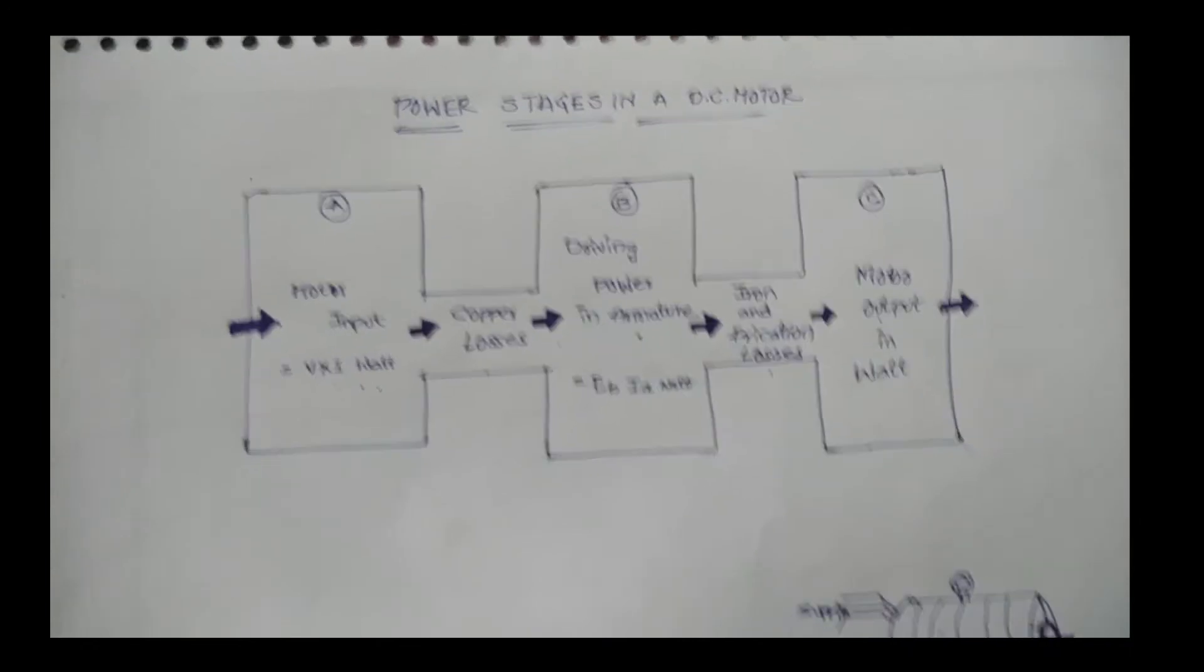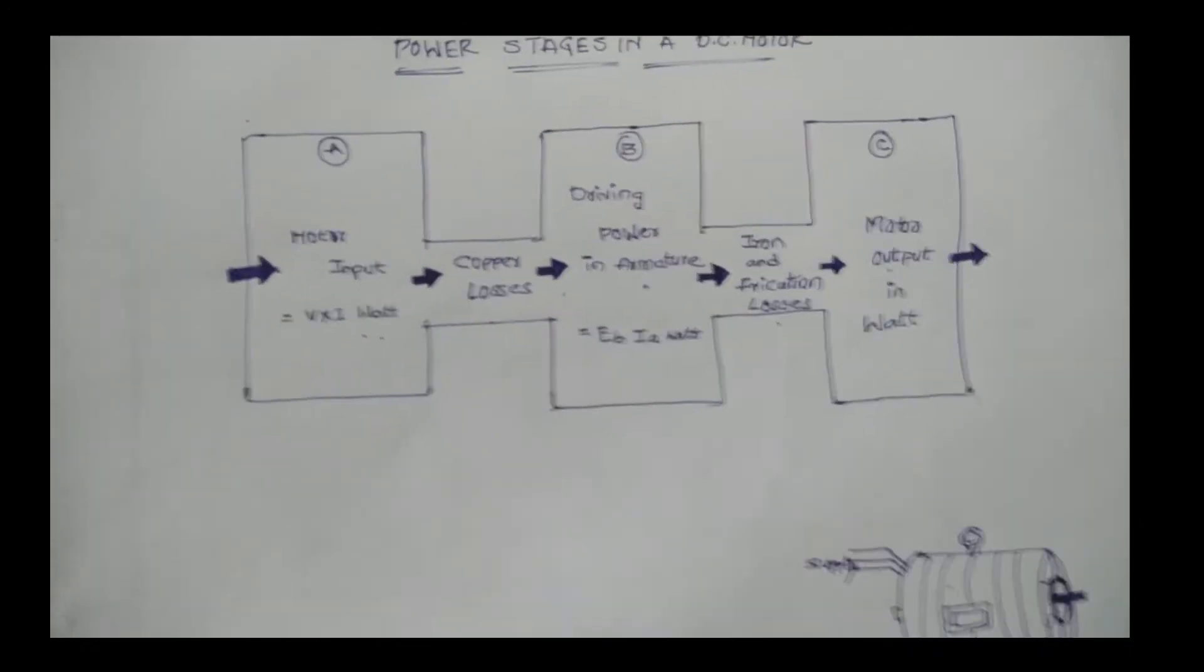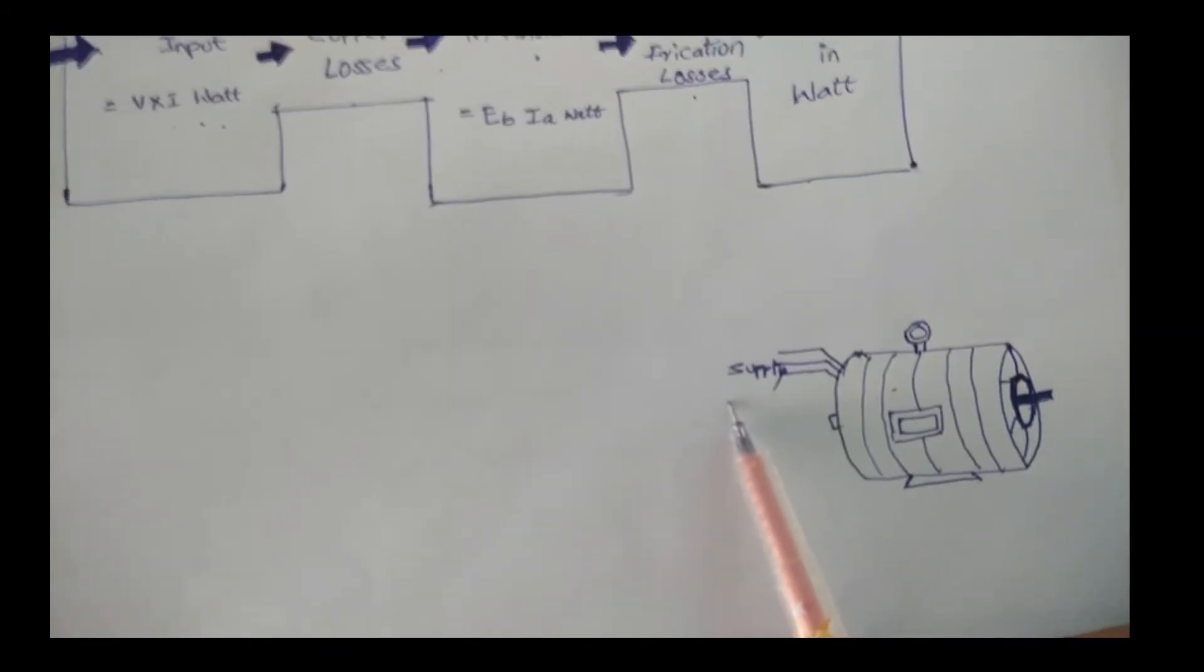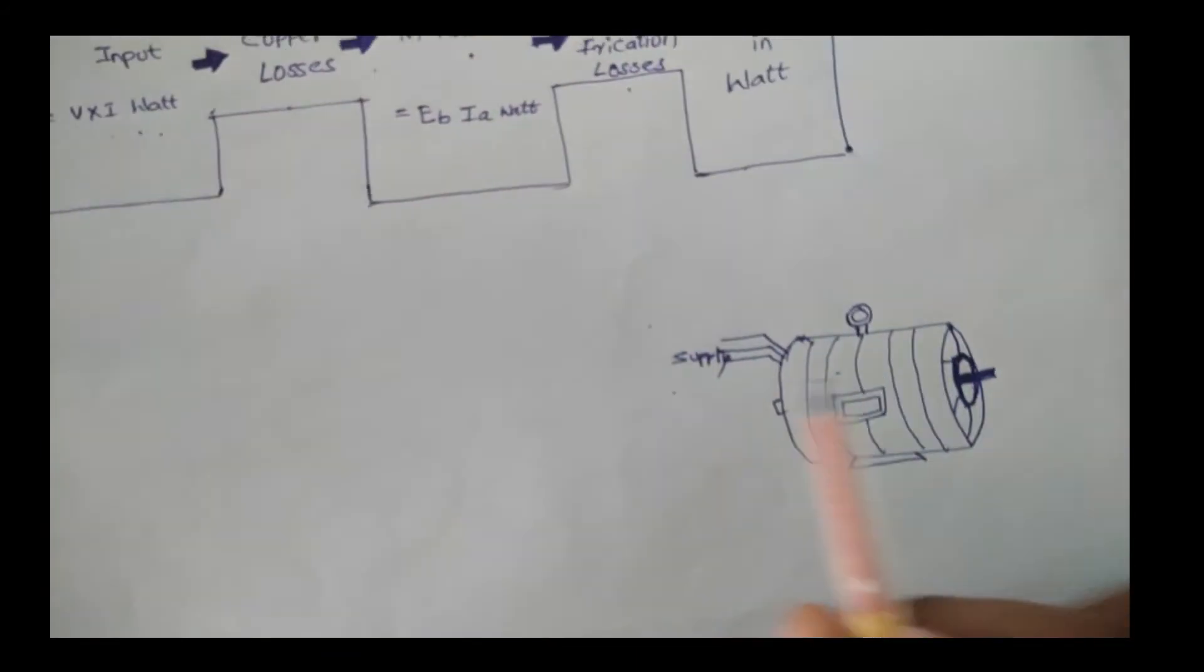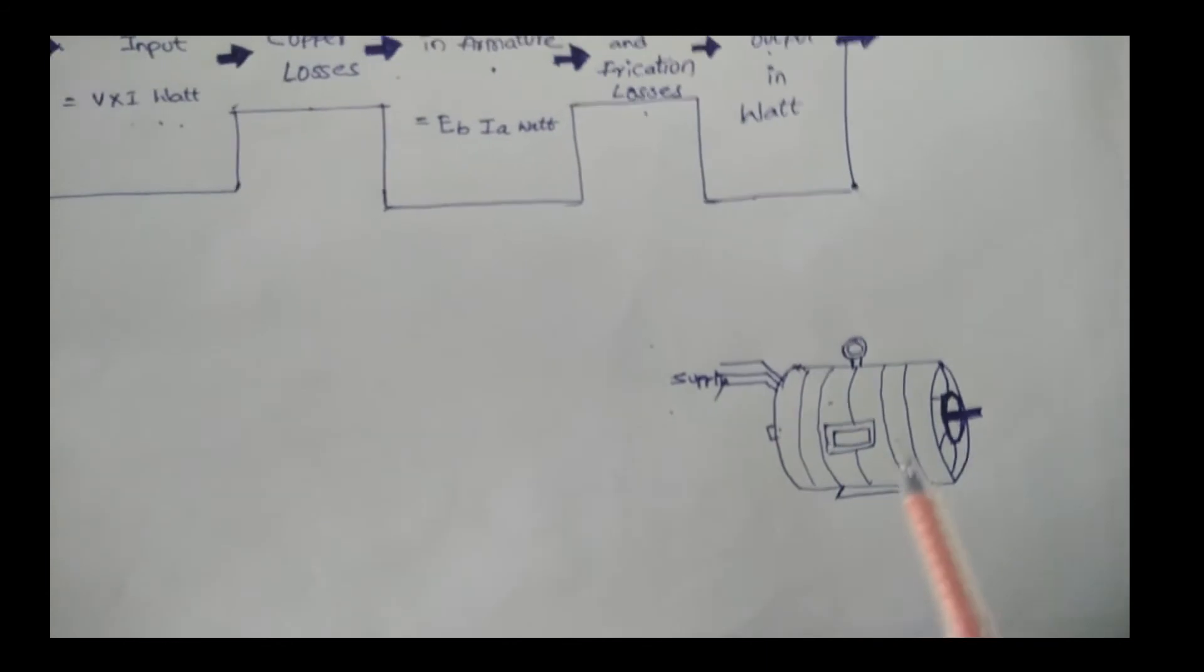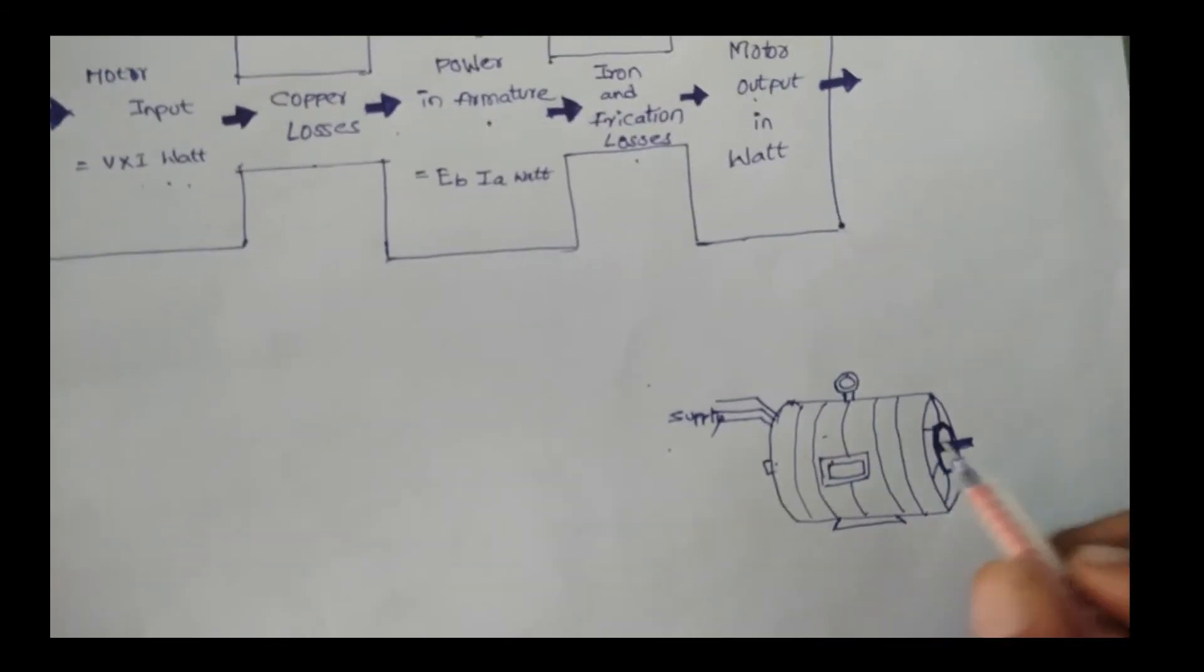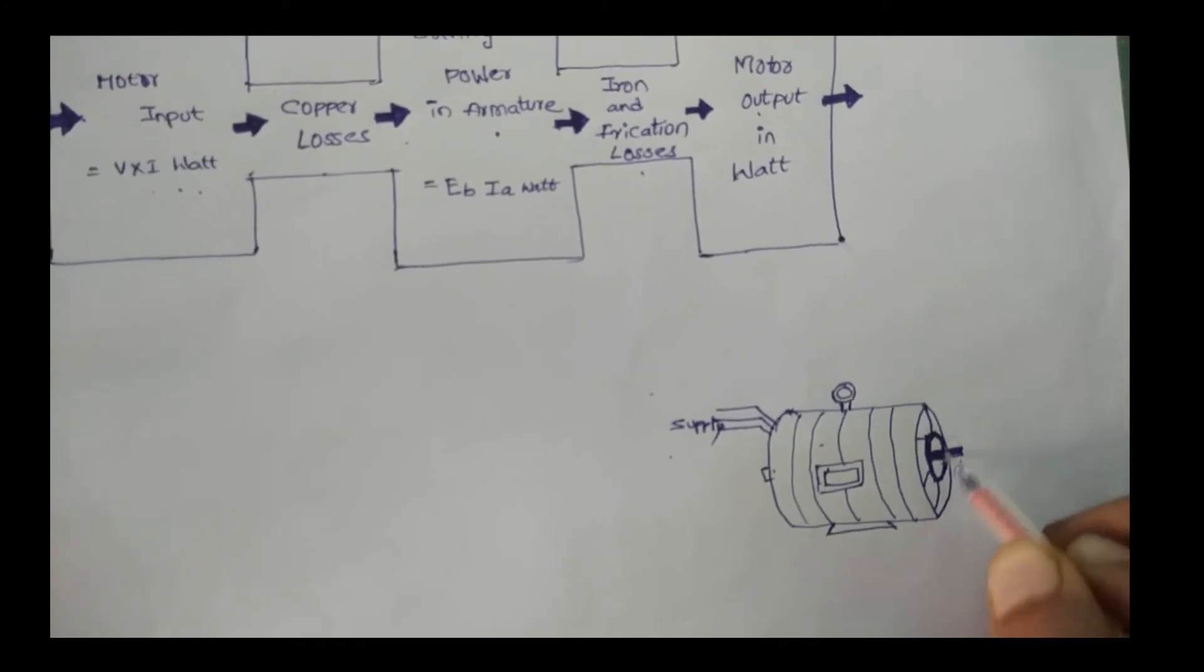Let's see the diagram here. We are giving the three-phase supply to the DC motor, which produces the mechanical output. The rotor rotates. The same thing applies to a DC generator.